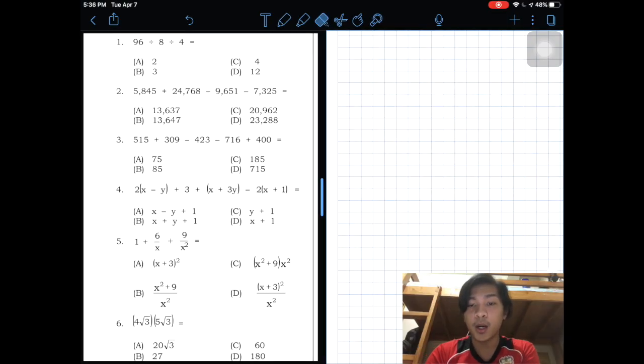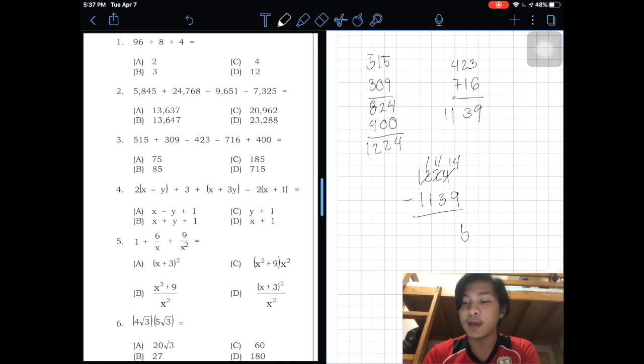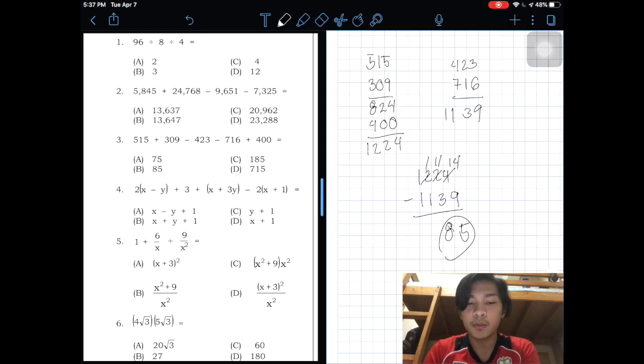For the next number, which is number 3, it is 515 plus 309 minus 423 plus 716 minus 400. This equals 824 minus 423 plus 716 minus 400, which gives 1,224 minus 1,139. This is 14, subtract to get 11, then 14 minus 9 is 5, giving us 85. So the answer is B.